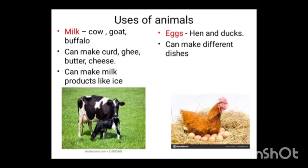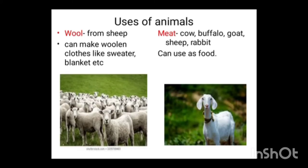Some animals give us eggs — that is hen, ducks, etc. We can make different dishes also. We love it! Sheep give us wool. With the wool we can make woolen clothes like sweaters, blankets, etc.